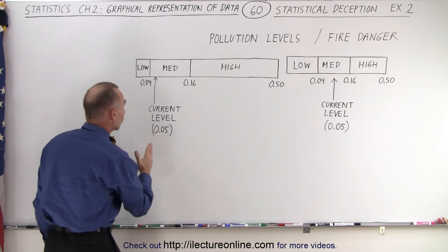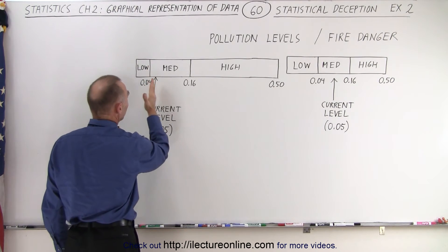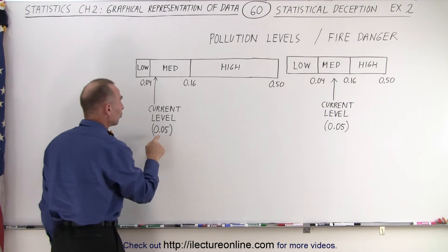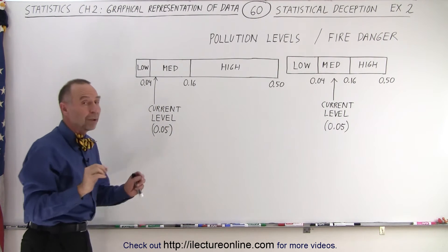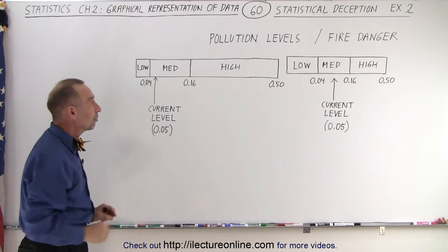Secondly, we put the current level arrow exactly where it belongs on the scale. Notice 0.05 is just barely inside the medium level from the low level. It's barely bigger than the high range of the low.